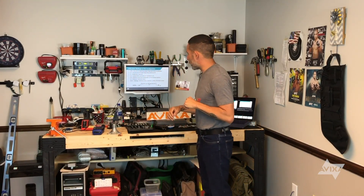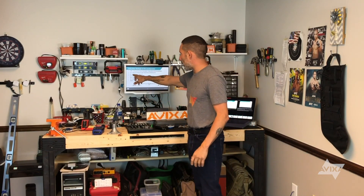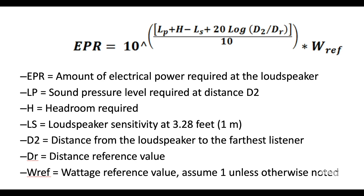So in our EPR calculation, the first variable we have is LP — that's going to be the sound pressure level that we need to hear. A few videos ago, I did a video on how loud should my audio system be: 25 to 30 dB above ambient noise — that is loud enough. So I want to make sure I take my ambient noise reading and then add 25 to 30 dB above that. That is going to be my LP, the sound pressure level required at the distance from the loudspeaker to my ear holes.